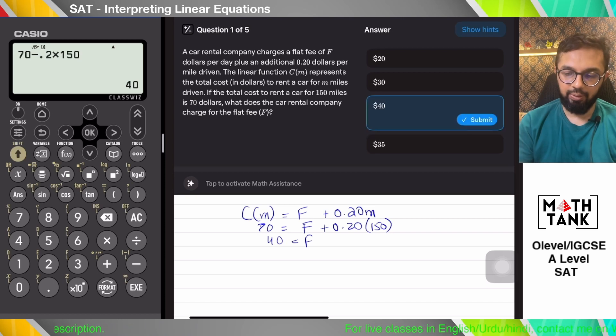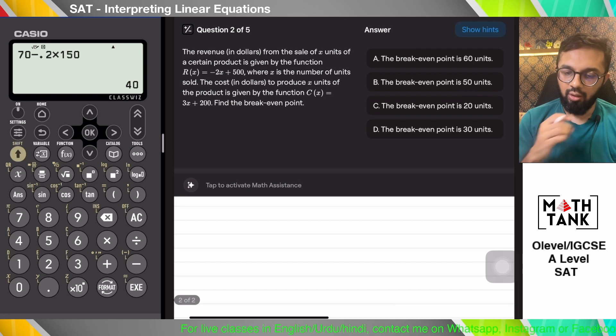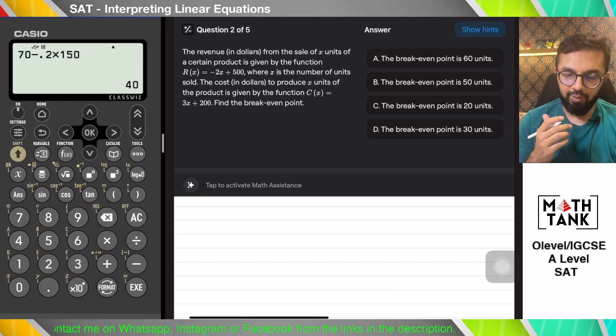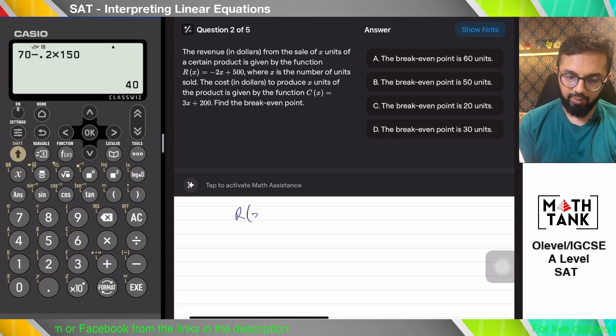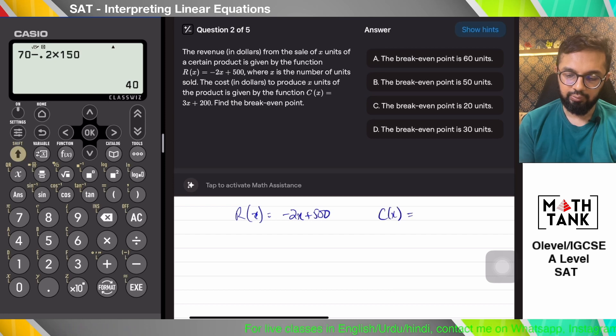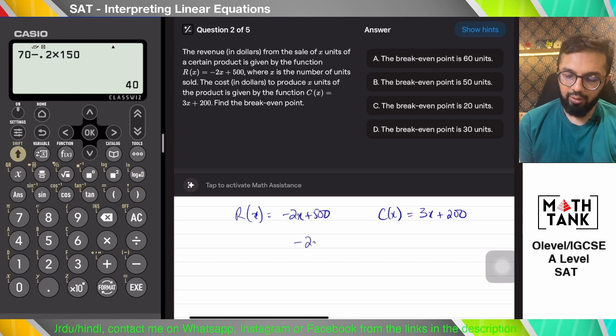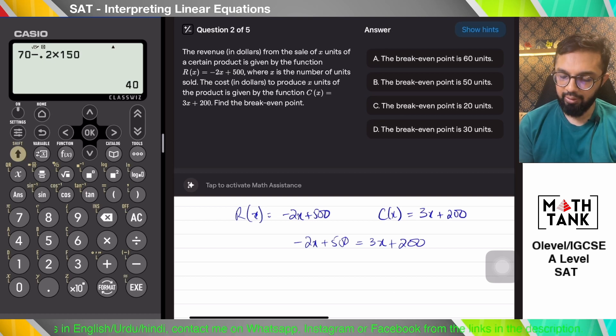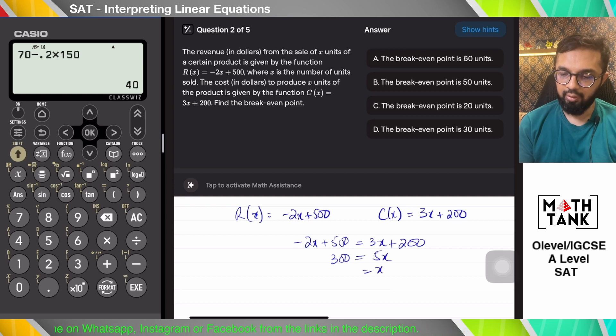The revenue in dollars from the sales of x units is given by this, where x is the number of units sold. The cost in dollars to produce x units is given by the function C(x). Find the break-even point. Break-even point is when revenue equals cost. It's a really weird revenue function with minus 2. I don't understand what's going on there, but I'm just going to calculate whatever answer is coming up. x equals 60.